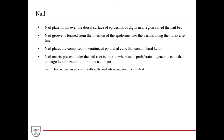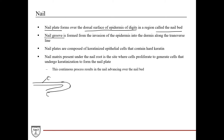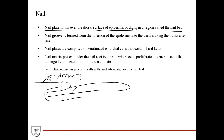The nail is composed mainly of the nail plate, which is the visible portion over the dorsal surface of the epidermis of digits, in a region called the nail bed. The nail is formed from invasion of the epidermis into the dermis at a region called the nail groove. The epidermis wraps around to form the nail, and the epidermis traveling just underneath forms the nail bed.